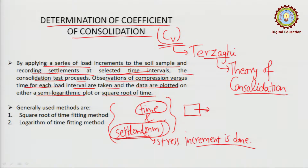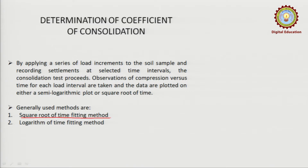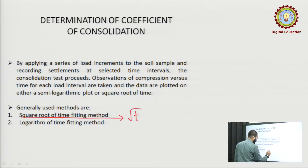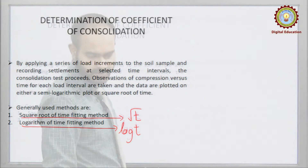From this whole exercise, we obtain a curve, and that curve will be used to find out the value of Cv. There are two main methods: one is the square root of time fitting method, and the other is the logarithmic of time fitting method. For the first we use √t, and for the second we use log t.